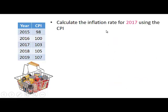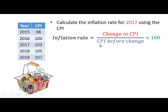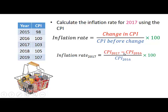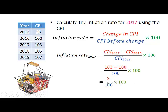Let's also calculate the inflation rate for 2017 using the CPI. We use the same formula: the change in CPI from 2016 to 2017, divided by the CPI for 2016. The CPI for 2017 is 103 and the CPI for 2016 is 100. So (103 minus 100) divided by 100, times 100, equals 3%.